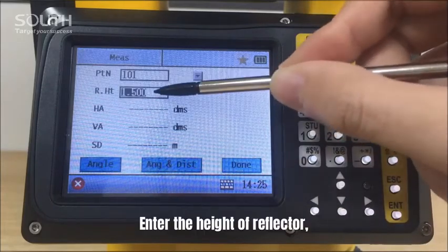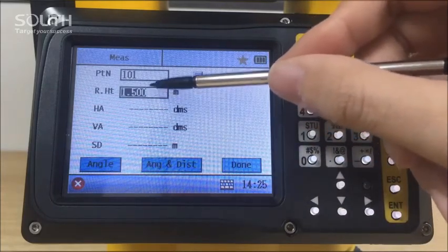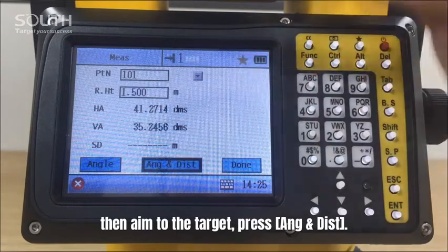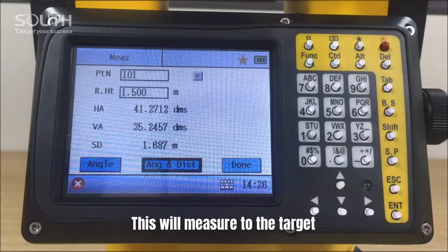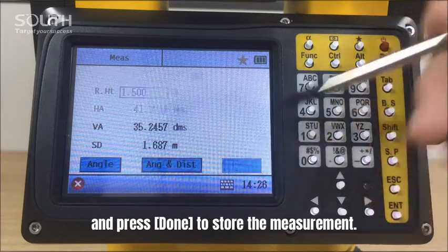Enter the height of reflector. Then aim to the target and press Angle and Distance. This will measure to the target and press Done to store the measurement.